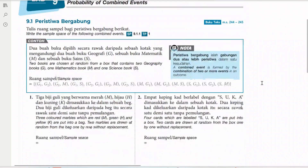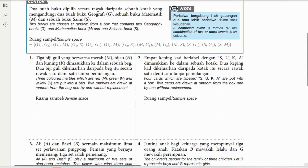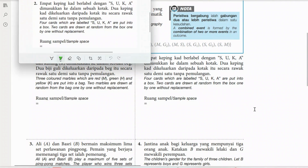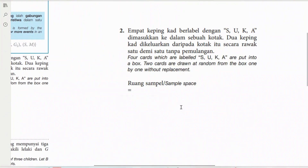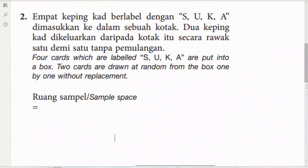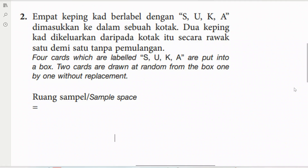Okay, we go for number two. We are going to find the sample space where we have four cards labeled S-U-K-A. Two cards are drawn at random from the box one by one without replacement — same like our textbook example. We can do this by using a table.